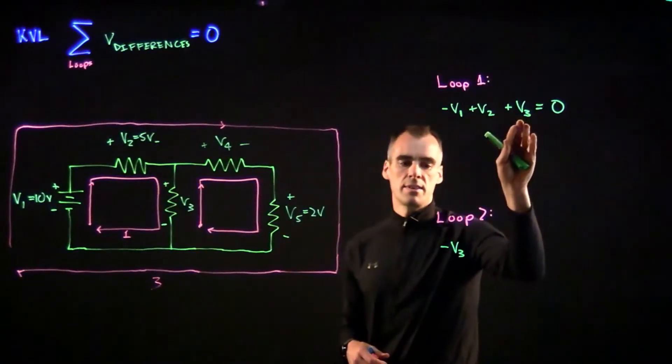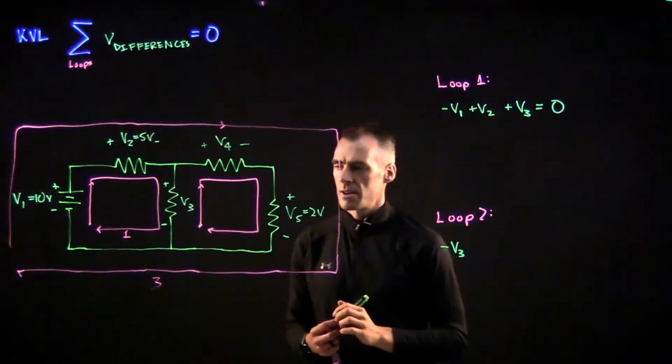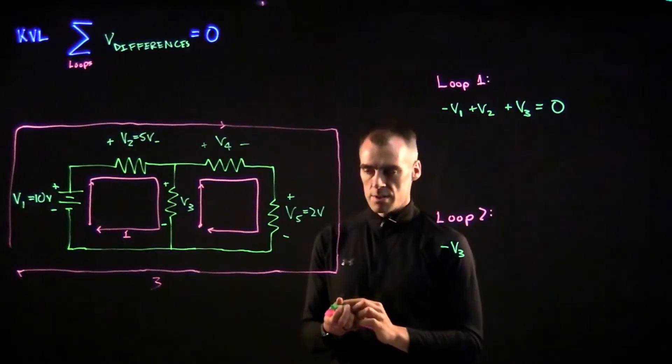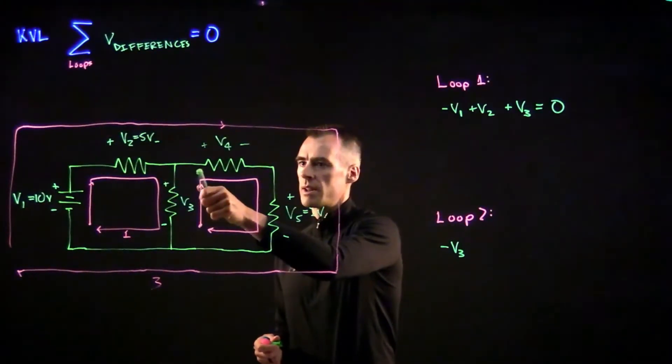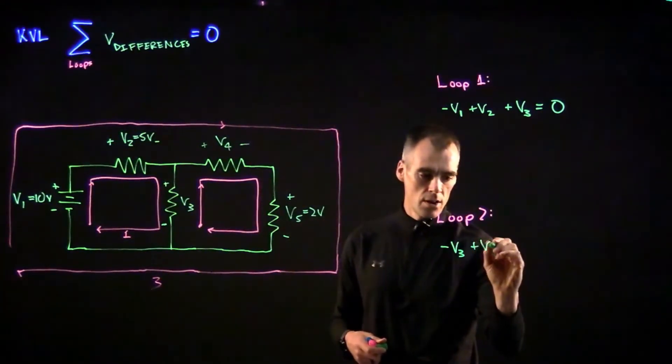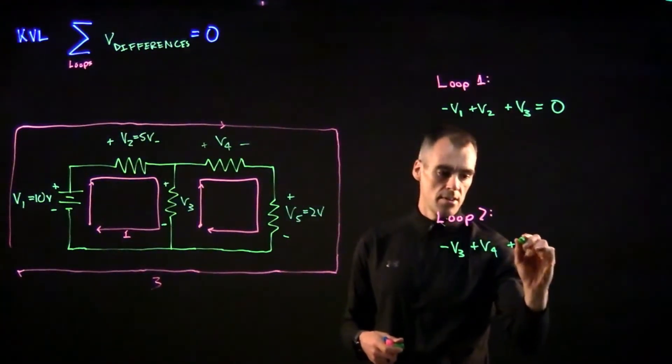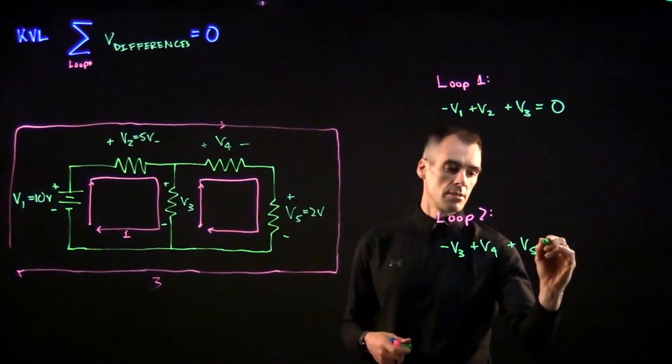So important to keep those proper. And as we go up here, we're going to hit the positive side of V4, and we're going to hit the positive side of V5, and we set that equal to zero.